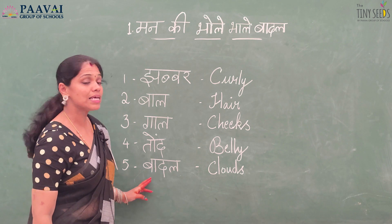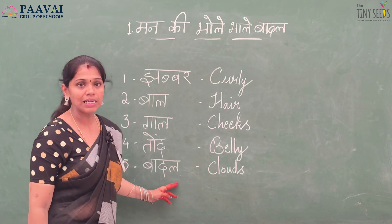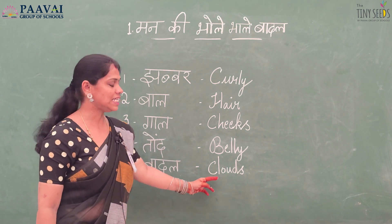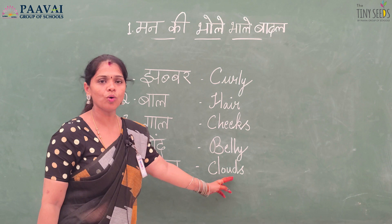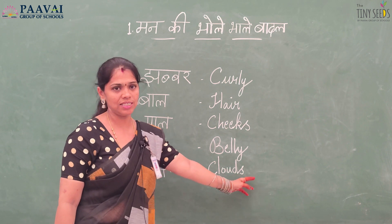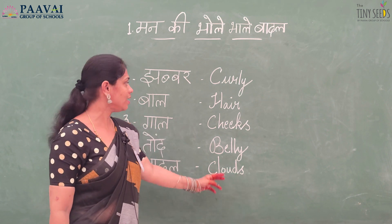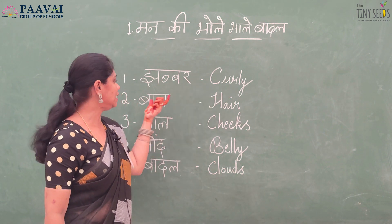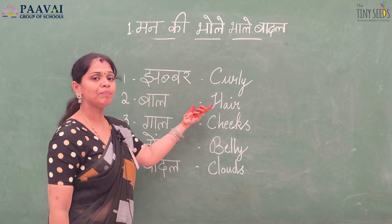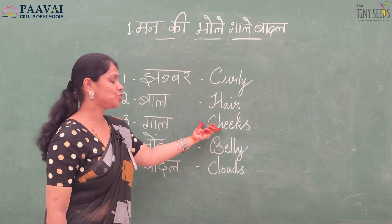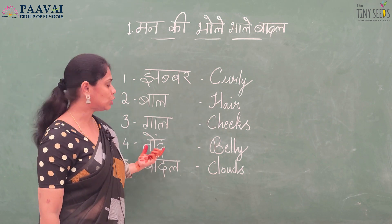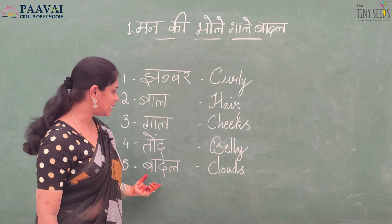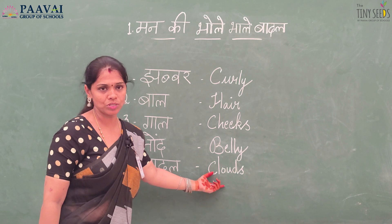And the last one is Badal — Badal ka matlab hai clouds, C-L-O-U-D-S. So to review: Jhabbar means curly, Baal means hair, Gaal means cheeks, Tond means belly, Badal means clouds.